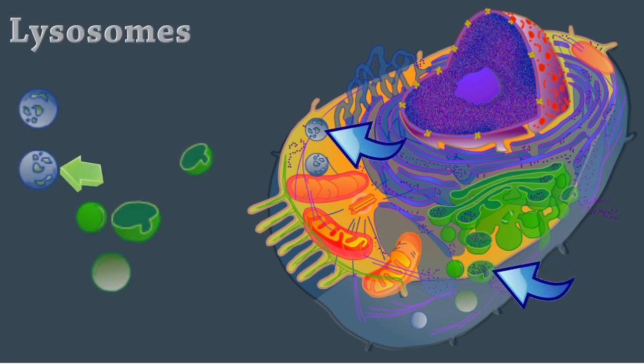Lysosomes are membranous sacs that contain acid hydrolases that break down different types of biomolecules. This is where intracellular digestion takes place. Lysosomes help with other cell processes, including secretion and the repair of plasma membranes.